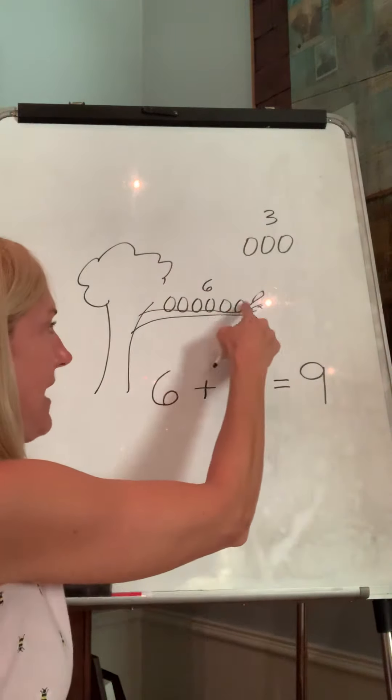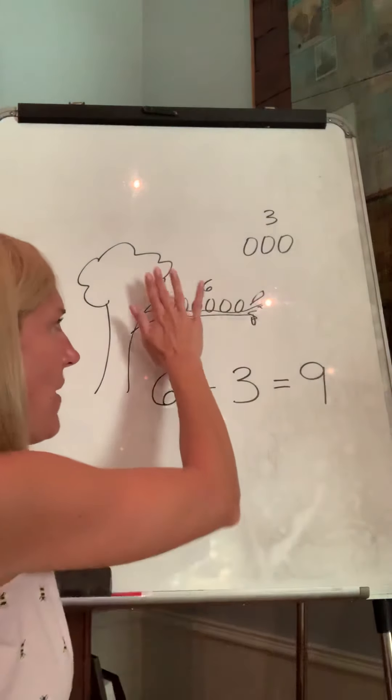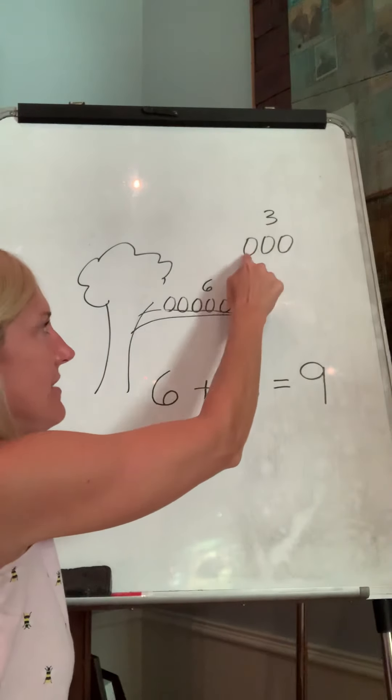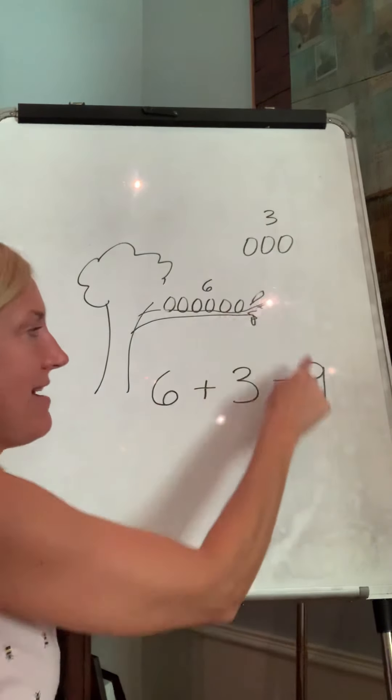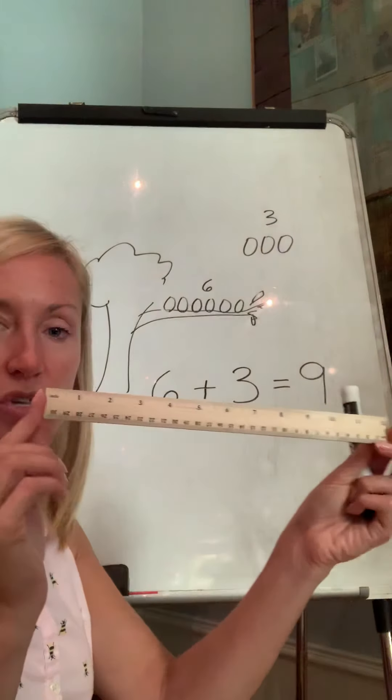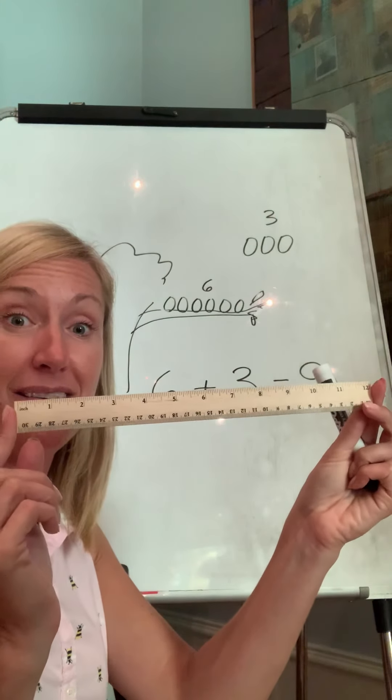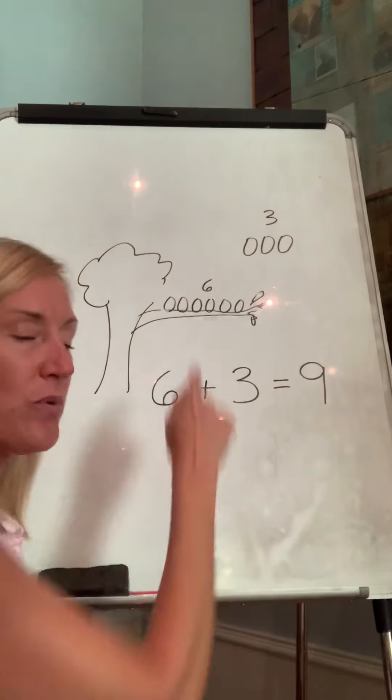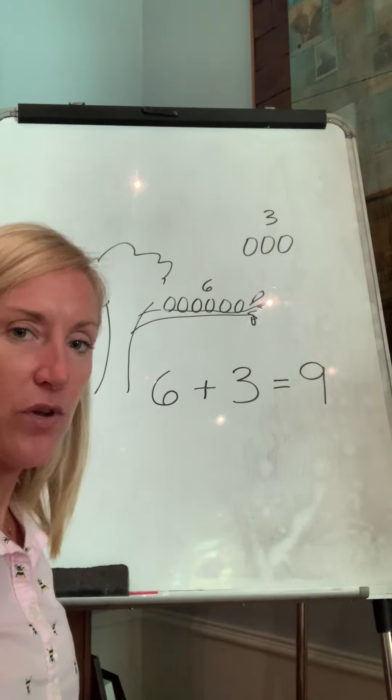So six, and I usually say the bigger number if I know it. So I know this one's six. So six, and then I keep counting. Six, seven, eight, nine. We get nine birds. But another strategy is you can use a number line, like you're on your ruler or make your own number line. You can just draw a picture and count it. Use the strategy that works for you.